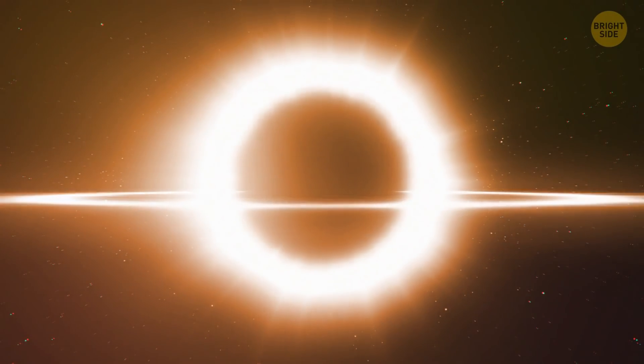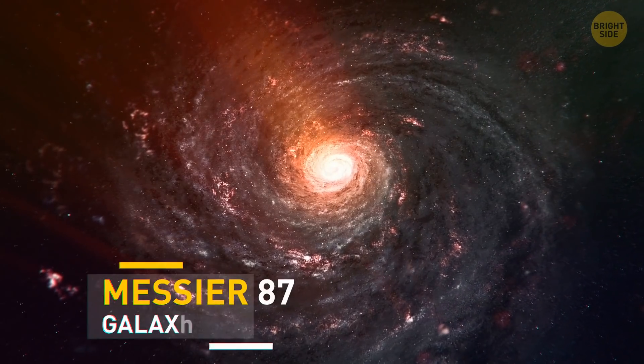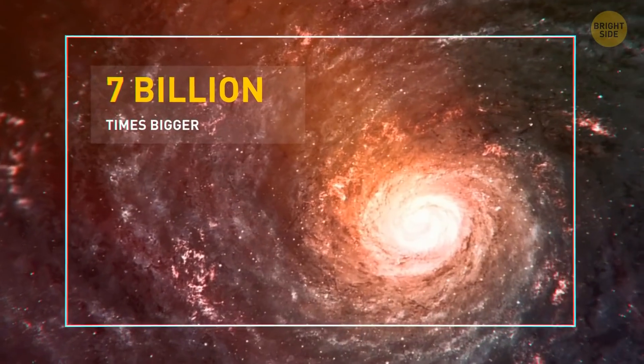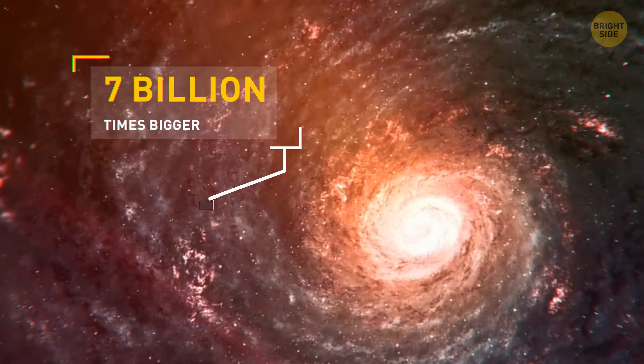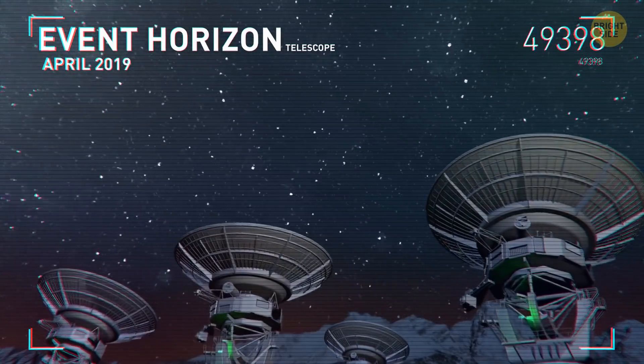And the way black holes are born is incredible. When a star runs out of fuel, the star collapses under its own weight and becomes a black hole, like the supermassive black hole in the Messier 87 galaxy. Its mass is 7 billion times bigger than the Sun, and it was discovered by the Event Horizon Telescope in April 2019.